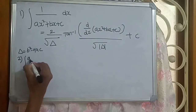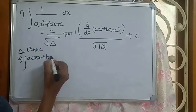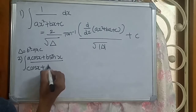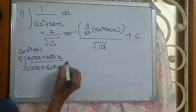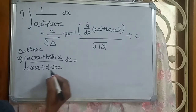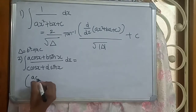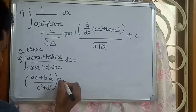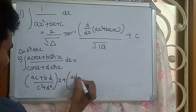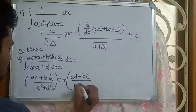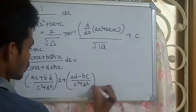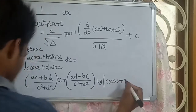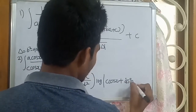Second formula: integration of A cos x plus B sin x by C cos x plus D sin x dx equals (AC plus BD) by (C squared plus D squared) times x, plus (AD minus BC) by (C squared plus D squared) times log of C cos x plus D sin x, plus C.